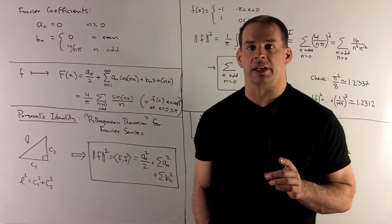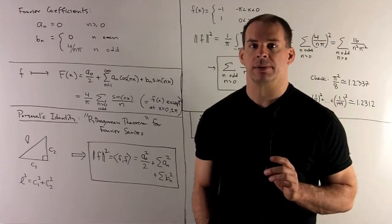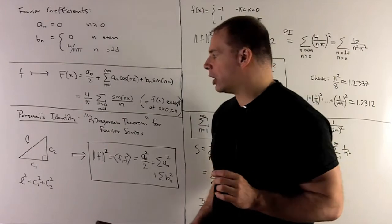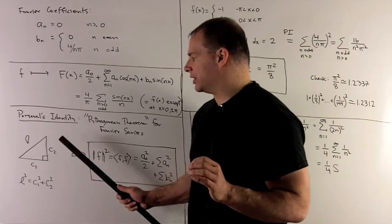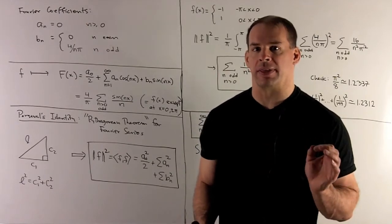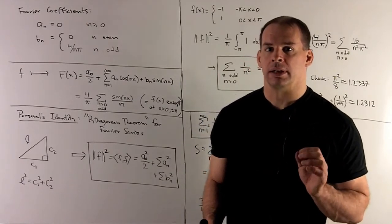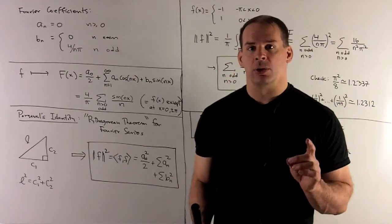Now let's take a look at Parseval's identity. This is going to be an analog of the Pythagorean theorem for Fourier series. By drawing a right triangle, we have hypotenuse as length L. Lengths of the legs are going to be c1 and c2. We have L squared equals c1 squared plus c2 squared by the Pythagorean theorem.